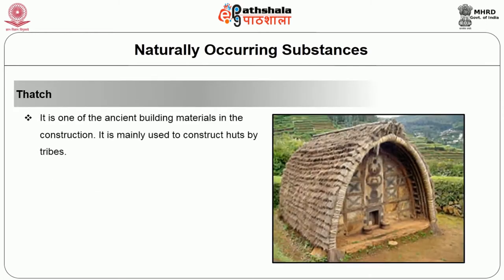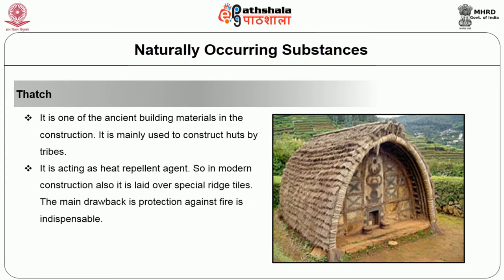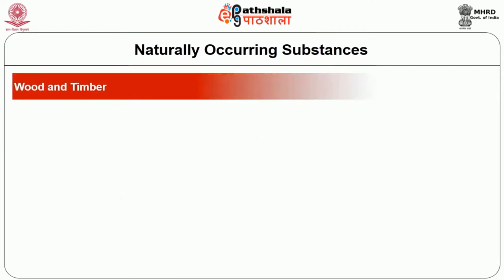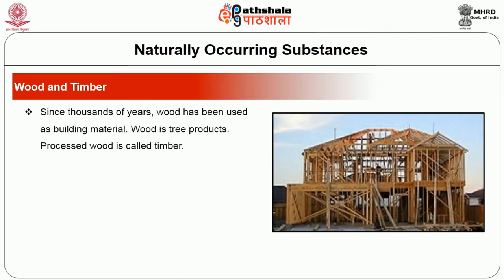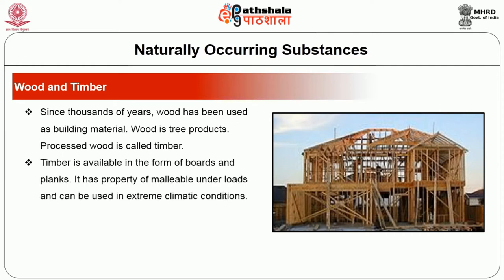Thatch is one of the ancient building materials, mainly used to construct huts by tribes. It is used as a heat repellent agent, and in modern construction it is laid over special roof tights. Its main drawback is that protection against fire is indispensable. Wood and timber: since thousands of years wood has been used as a building material. Processed wood is called timber, available in the form of boards and planks, with the property of being malleable under loads and usable in extreme climatic conditions.